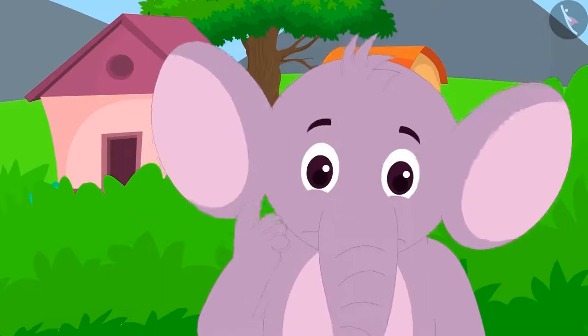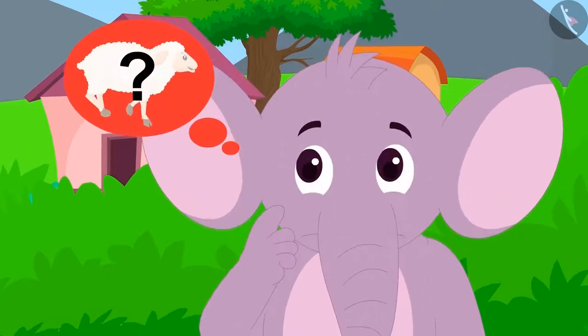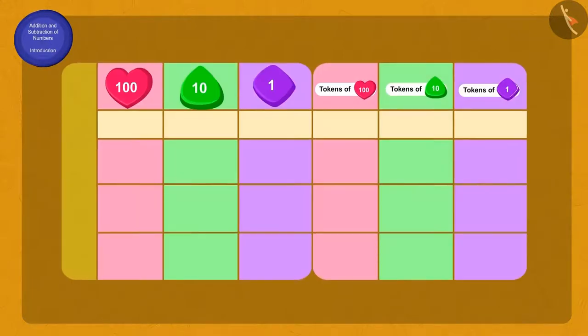Appu is wondering how many sheep he is now left with. Can you help Appu find how many sheep are left with him? To know the number of sheep left with Appu, we will subtract 127 sheep from 568 sheep.